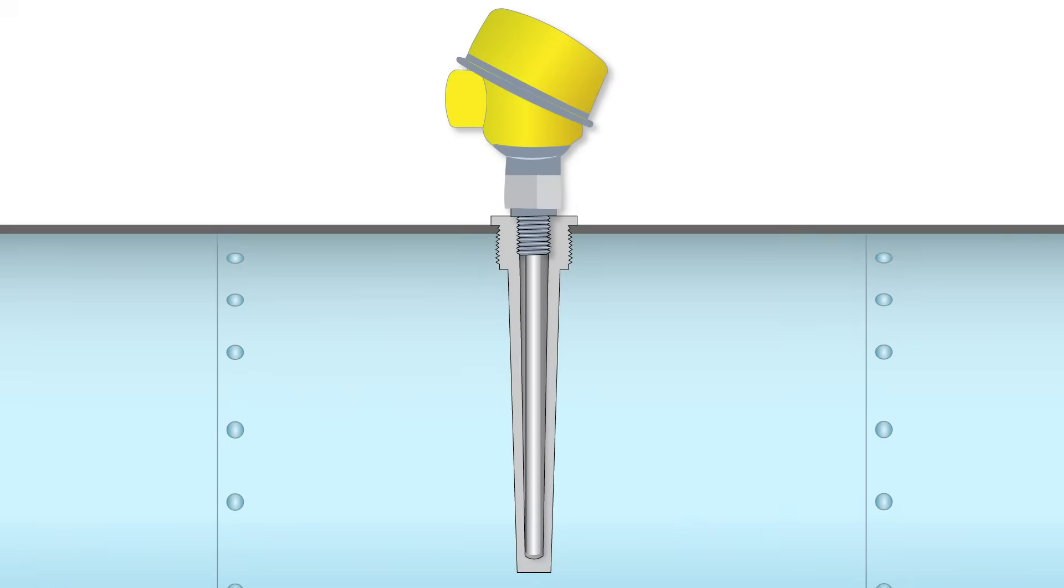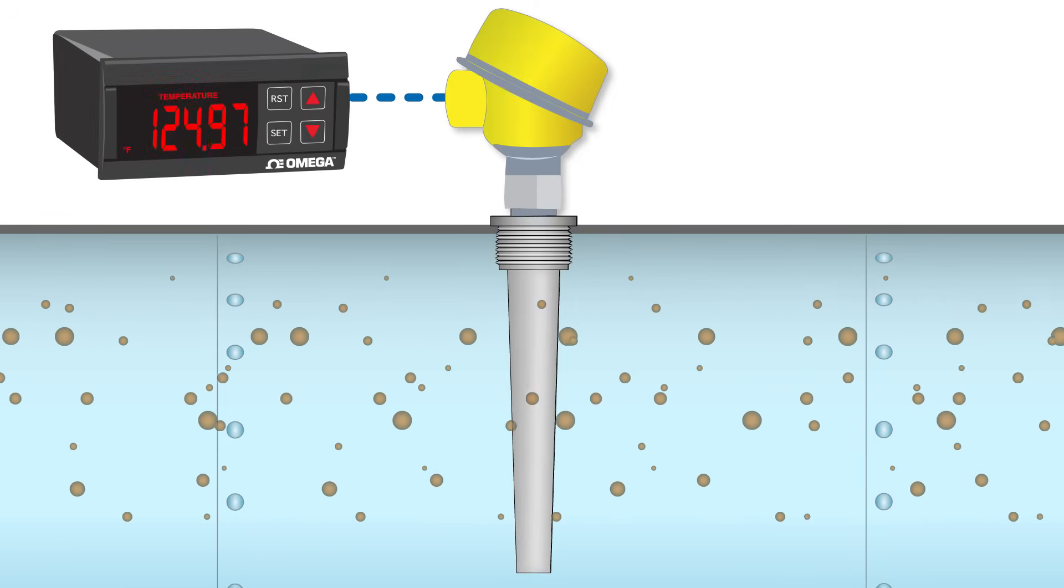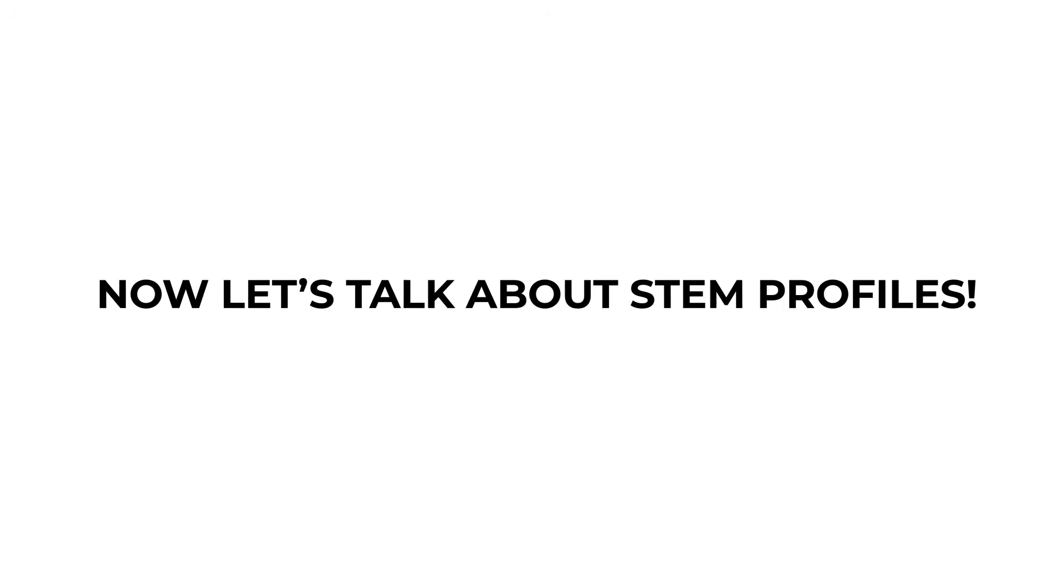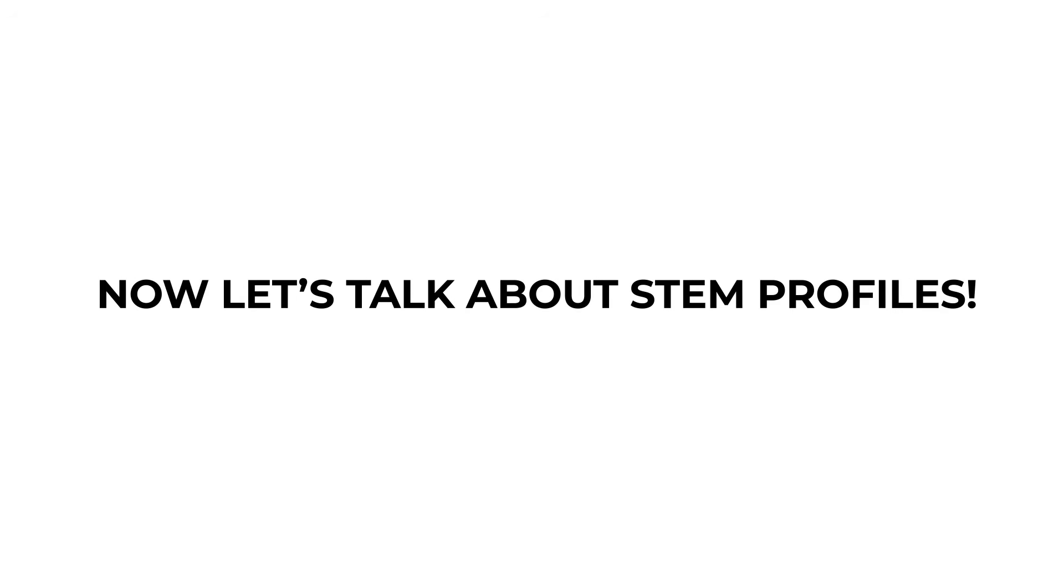Once the positioning between the tip of the sensor and the thermal well has been established, the sensor can read the temperature through the walls of the thermal well. Thermal wells are typically categorized by the type of stem profile. They each have their own advantages and disadvantages.